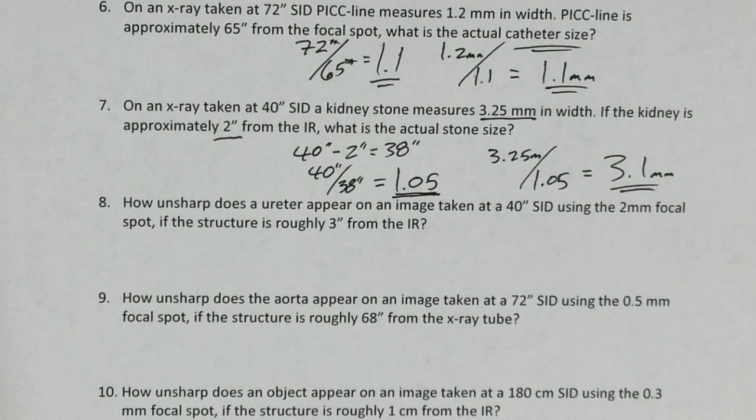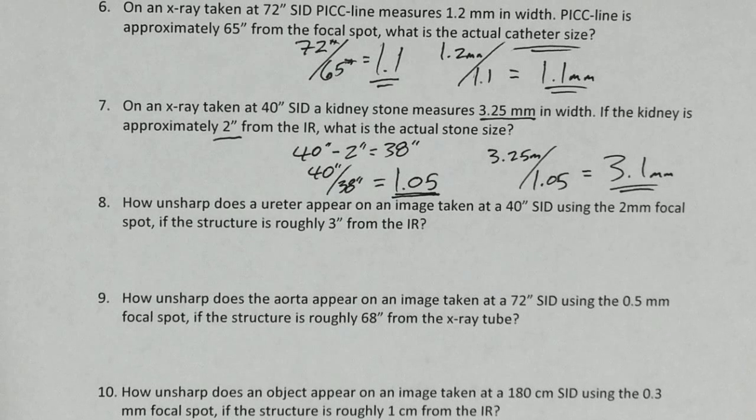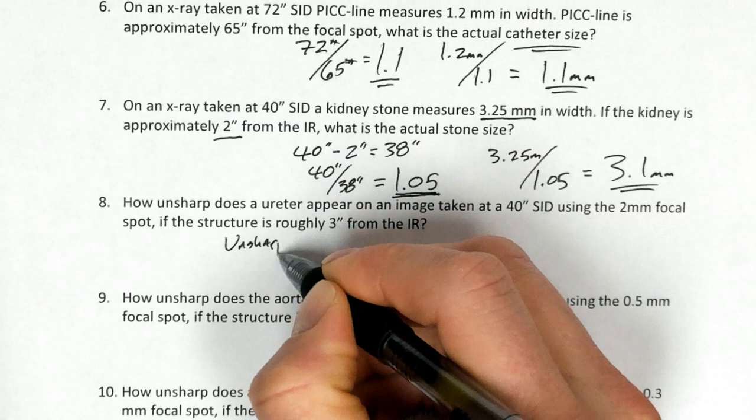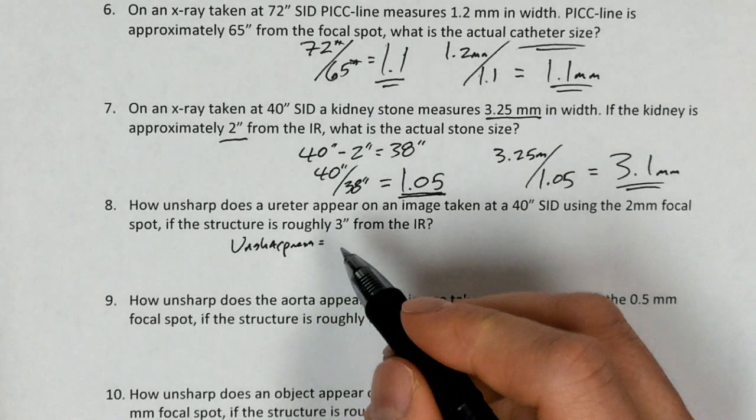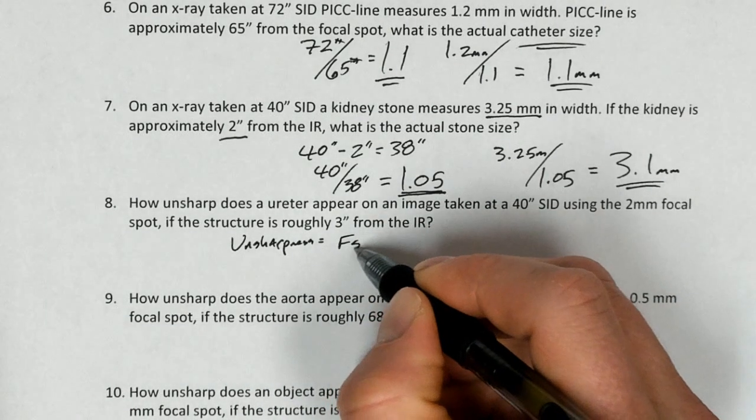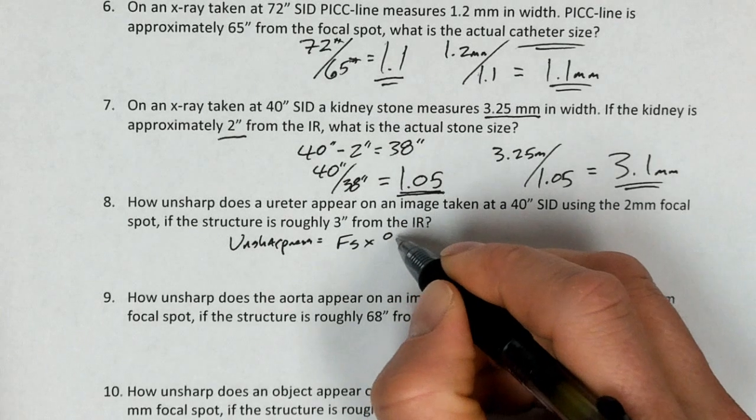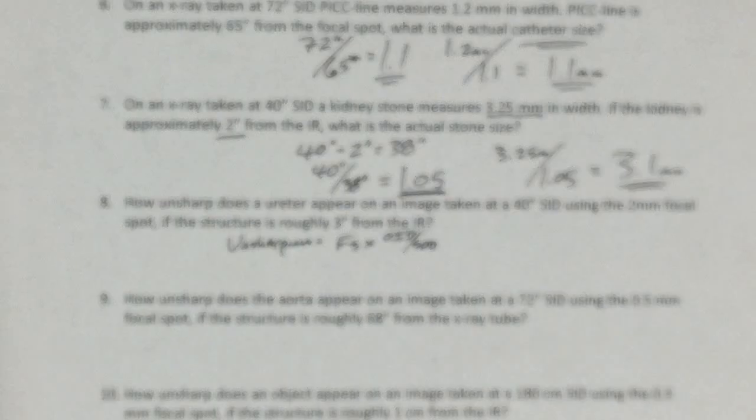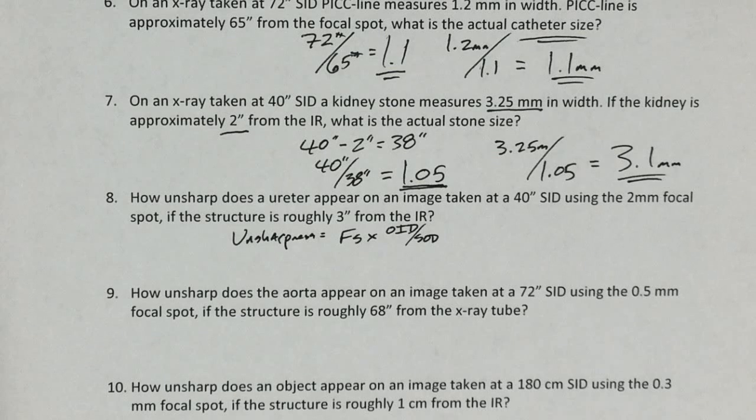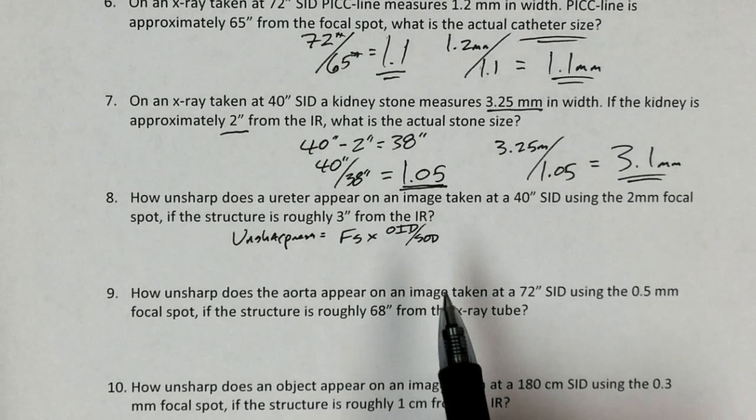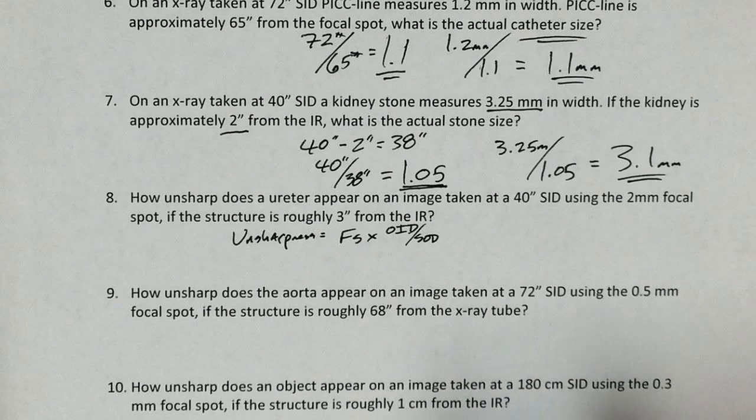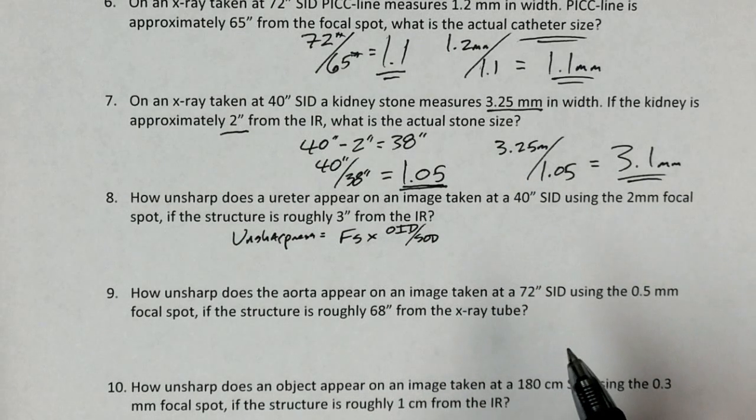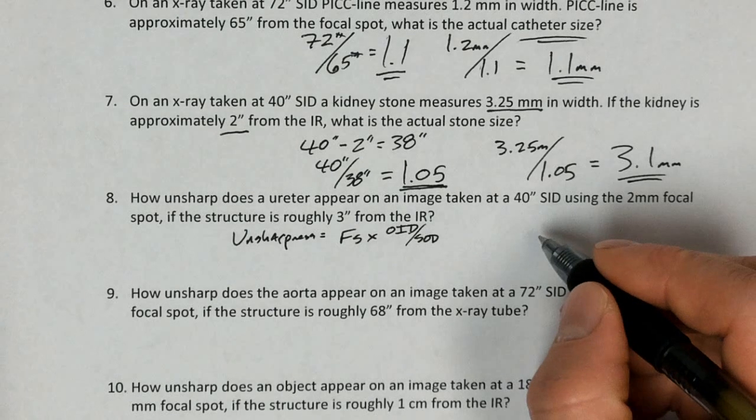This next problem is asking us about sharpness. And so we still need to know our SIDs and our SODs and stuff like that to calculate sharpness. And this is a mathematical thing that we can gauge using some basic geometry. Unsharpness or penumbra is going to be equal to the focal spot times OID divided by SOD. That gives us the actual geometric unsharpness of the image, which is something that is mathematically measurable. As opposed to sharpness, sharpness is not mathematically measurable. A lot of times we refer to it as relative sharpness or something like that. But we can measure unsharpness, so the area of penumbra.